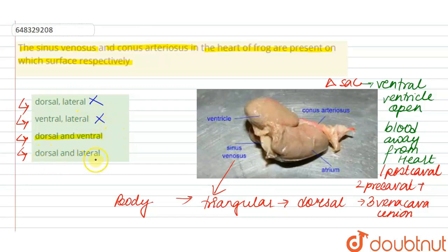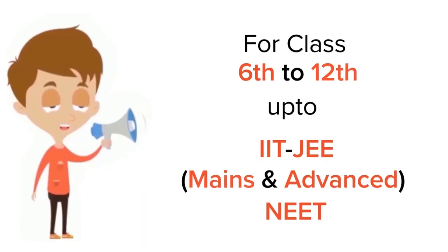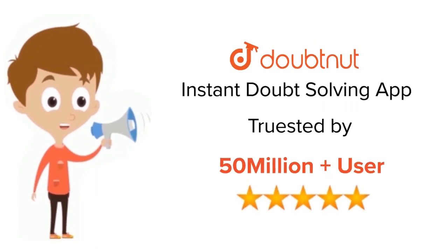Again, sinus venosus is dorsal, this one is a match, but conus arteriosus is not located at the lateral side, so this is also incorrect. For class 6-12, IIT JEE and NEET level, trusted by more than five crore students, download Doubtnet app.